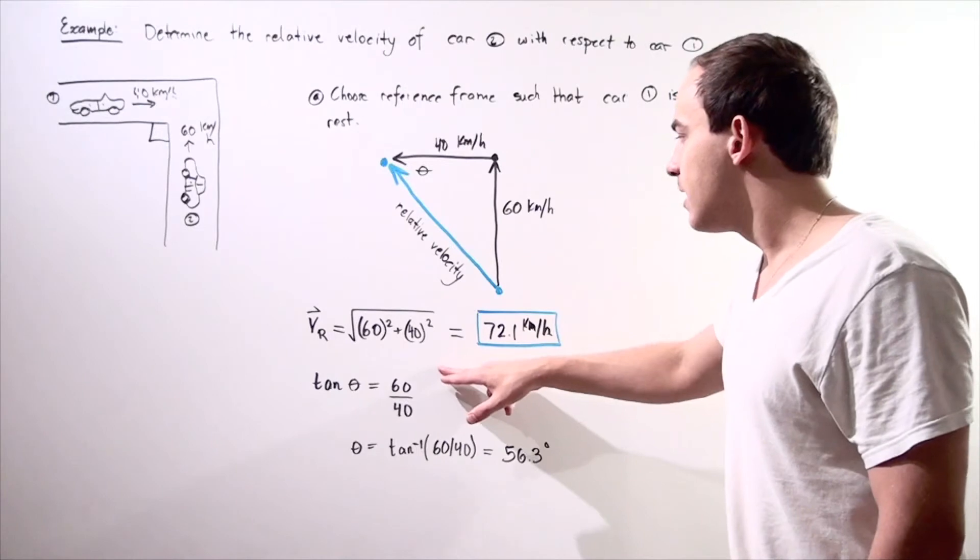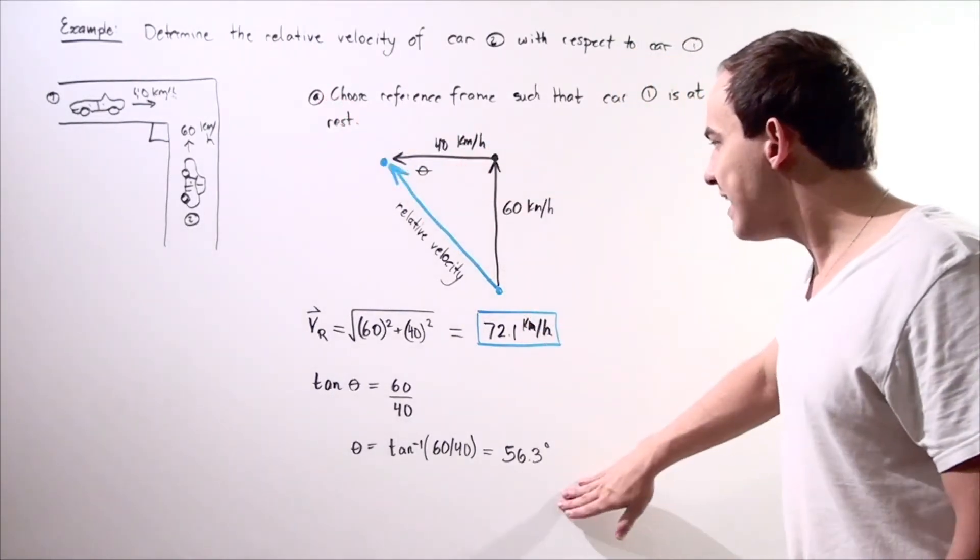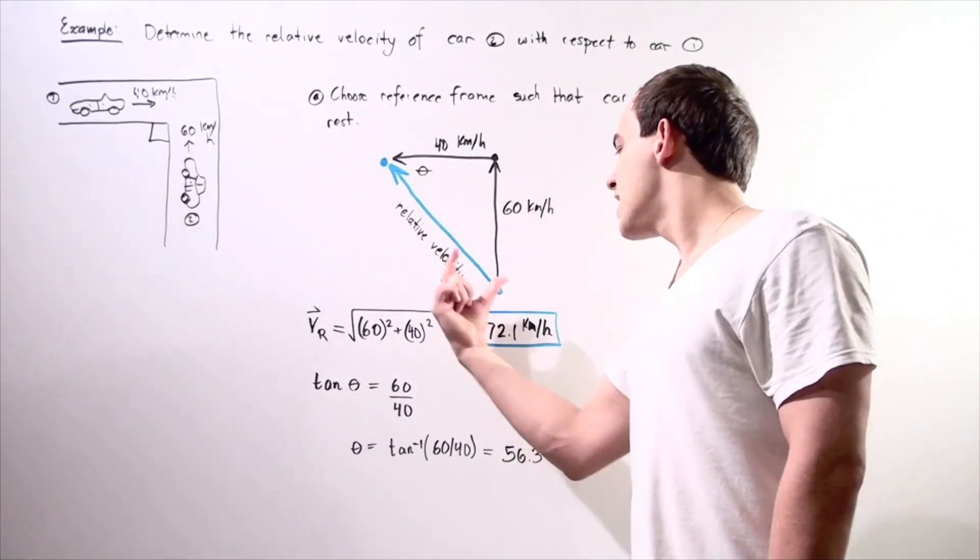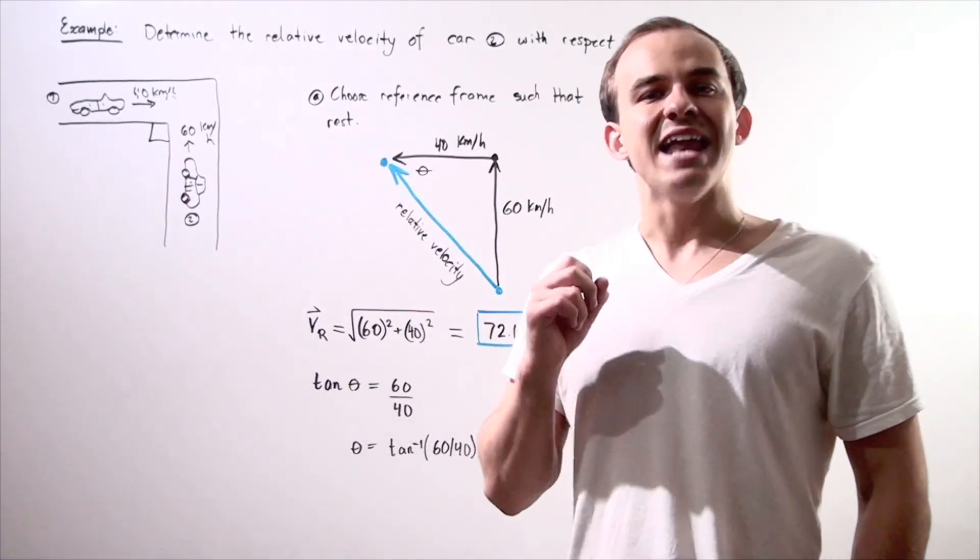So our relative velocity points in this direction with this angle and it has a magnitude of 72.1 kilometers an hour.